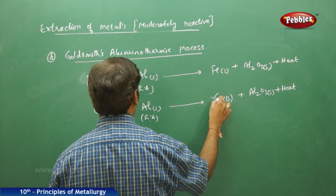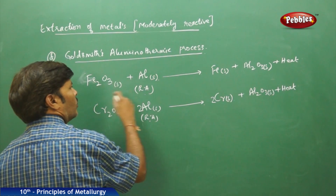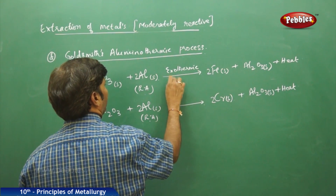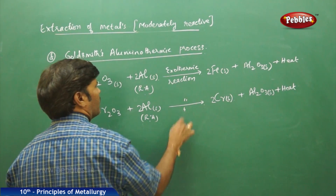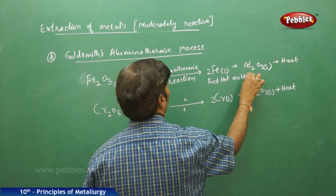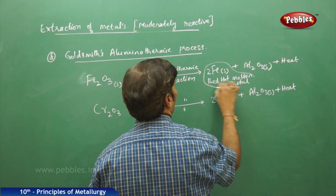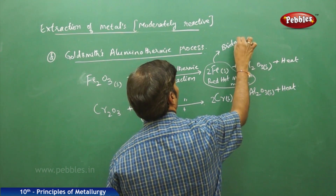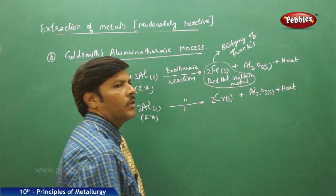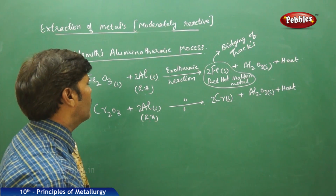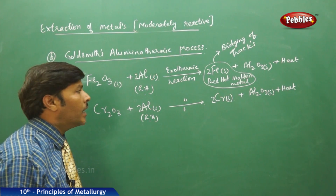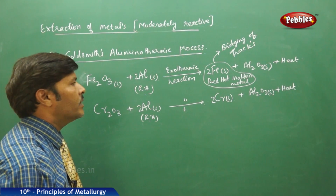To balance: there are 2 chromiums so take 2 Cr, 2 aluminium so take 2 Al, 2 irons so take 2 Fe, and 2 aluminium so take 2 Al2O3. Both reactions are exothermic. The iron obtained is red-hot molten metal used in welding and bridging of railway tracks. Because a large amount of heat is liberated, we call these exothermic reactions — this special type is called Goldschmidt's Aluminothermic Process.